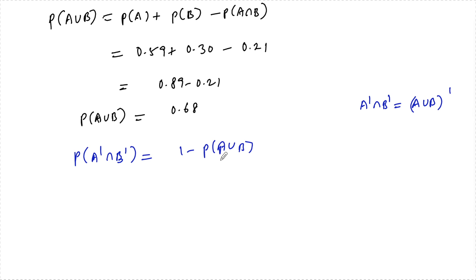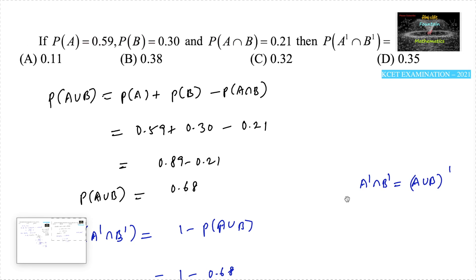So we can write 1 minus P(A union B), which is 0.68, so 1 minus 0.68 is 0.32. So we can go with option 0.32, which is option C, the answer.